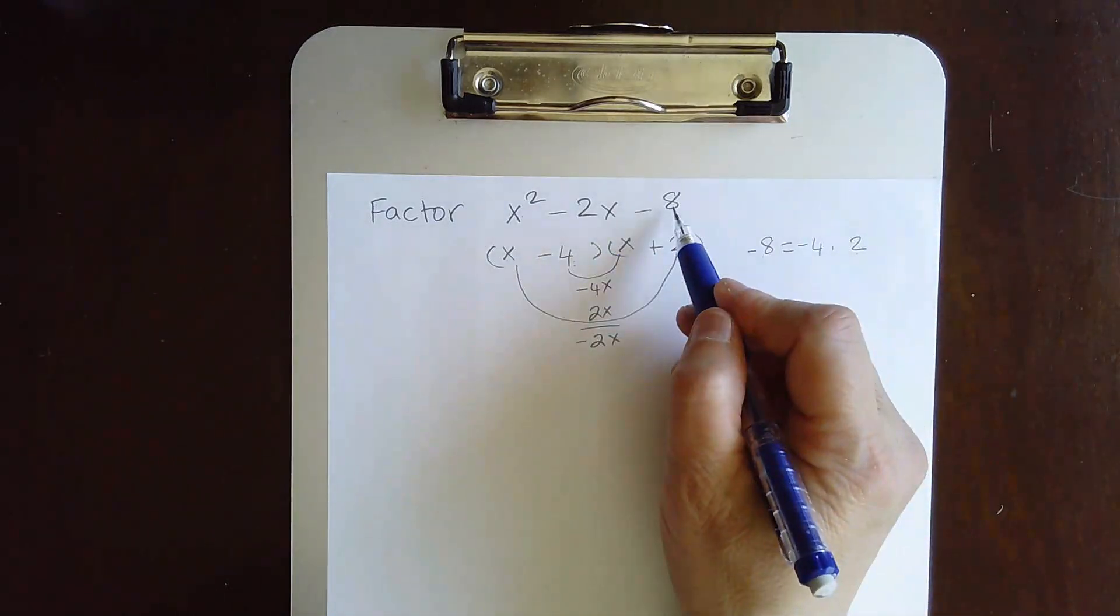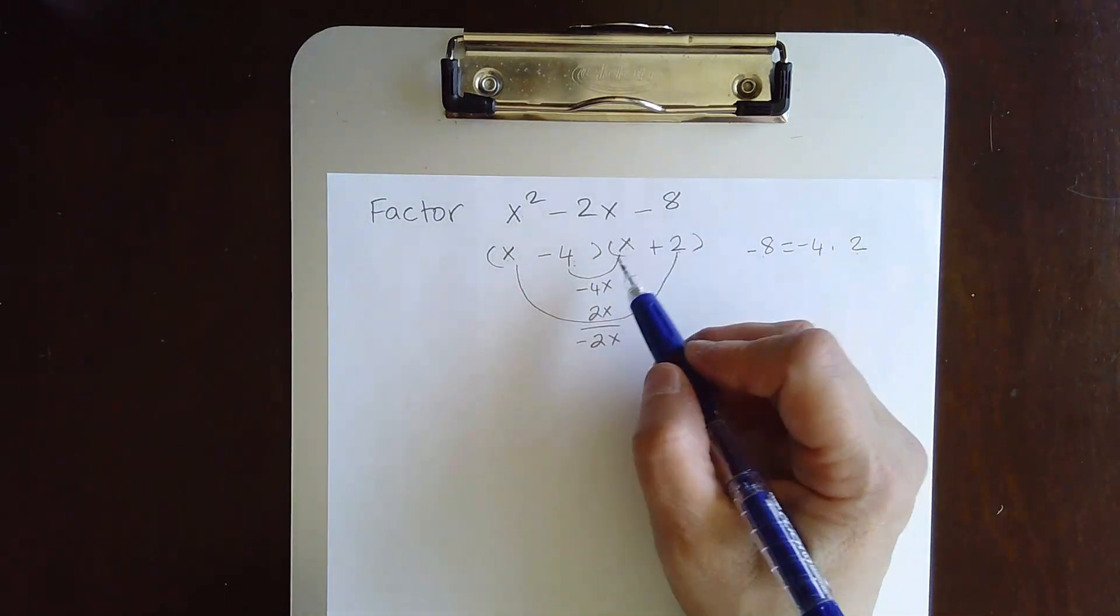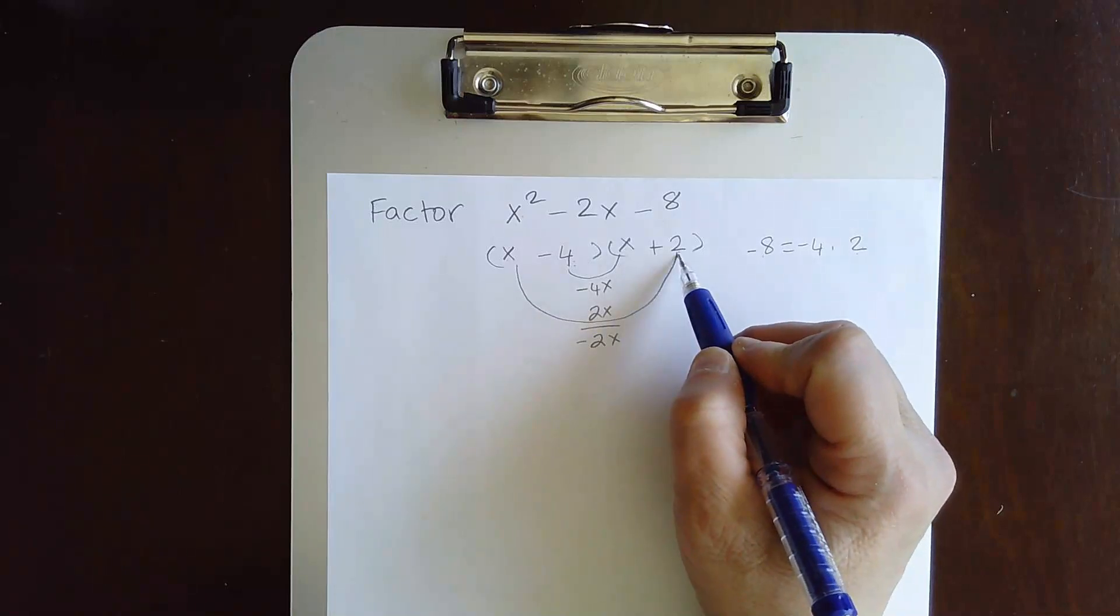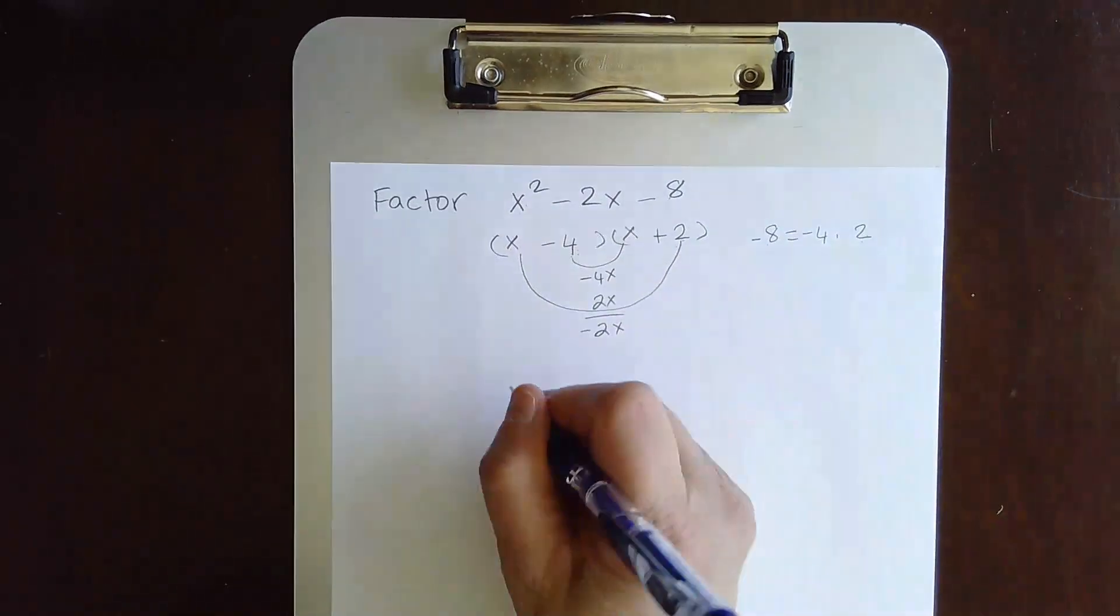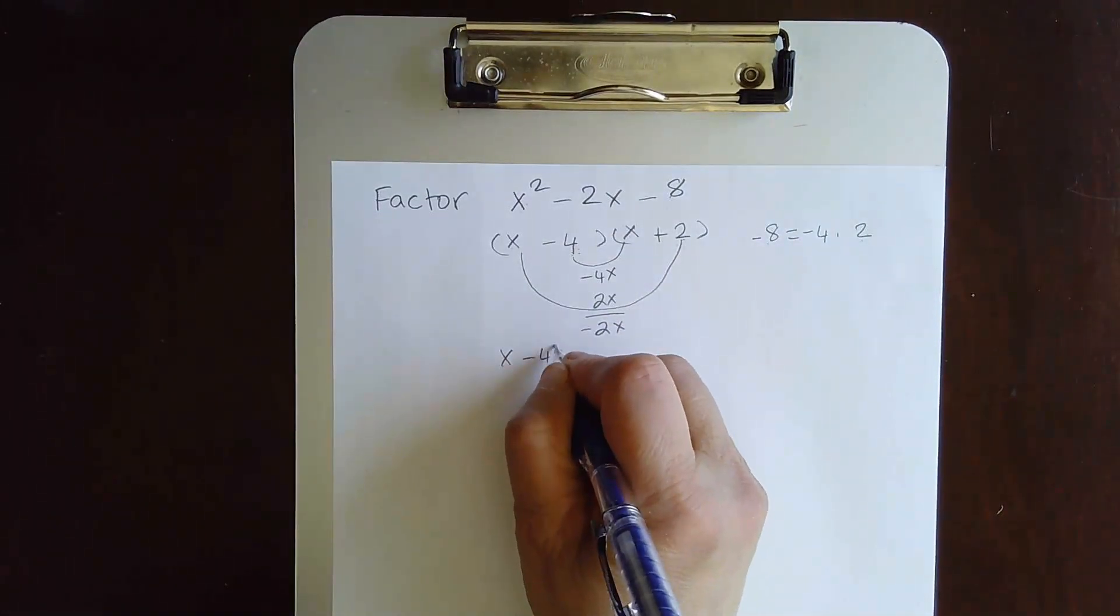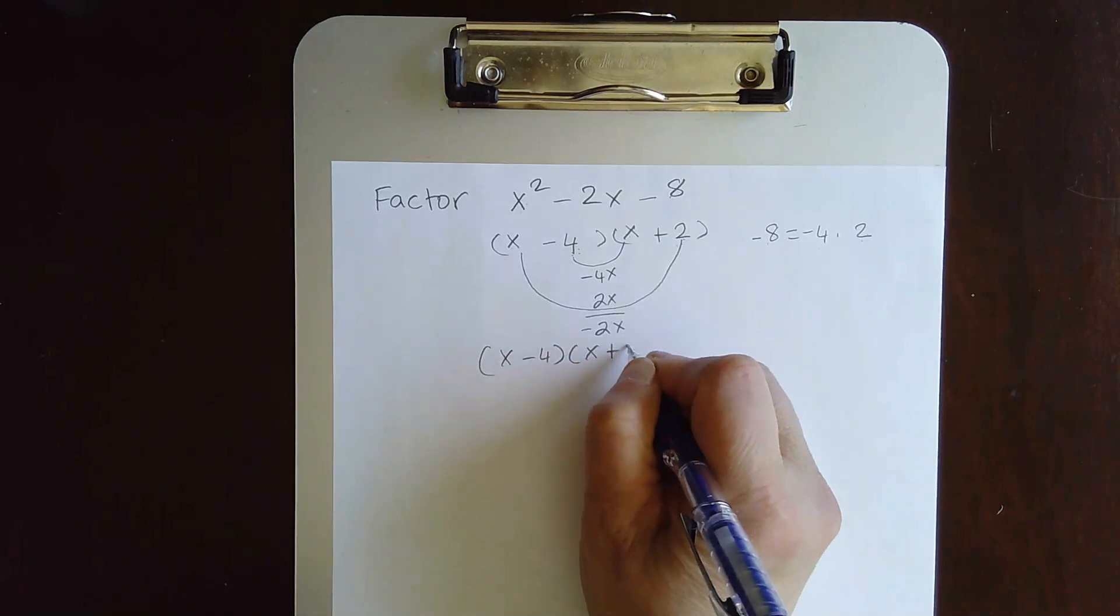And then the product here, the constant is negative 4 times 2. Negative 4 times 2 is negative 8. So that is the correct factoring x minus 4 times x plus 2.